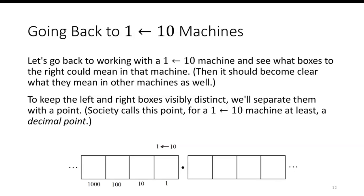Let's go back to working with a 1←10 machine and see what boxes to the right could mean for that machine. Then it should be clear what they mean in other machines as well. To keep the left and right boxes visibly distinct, we'll separate them with a point. Society calls this a point, and for a 1←10 machine at least, it's called a decimal point.